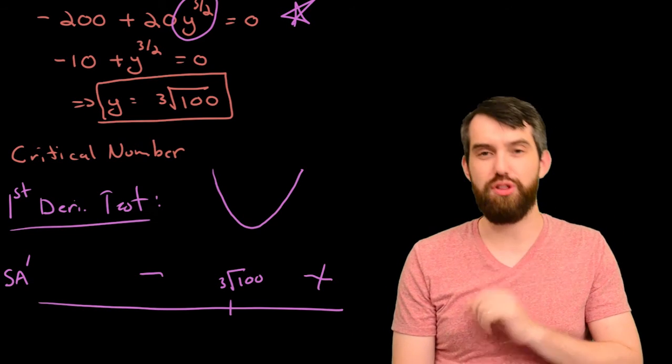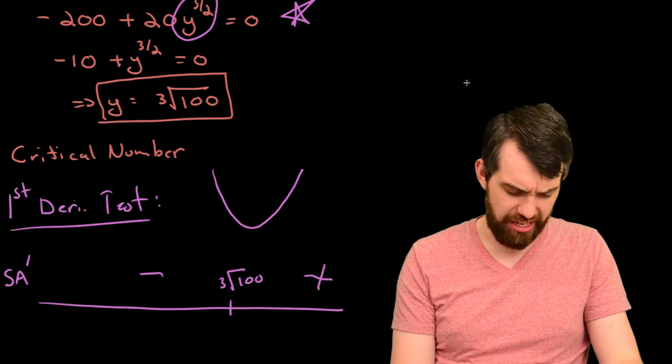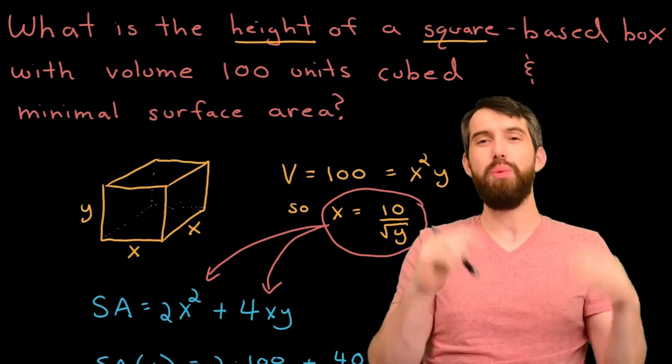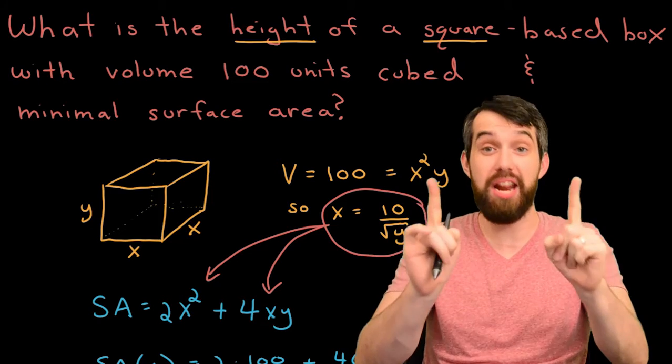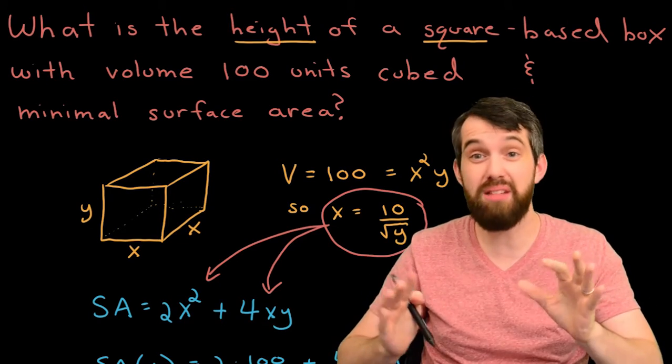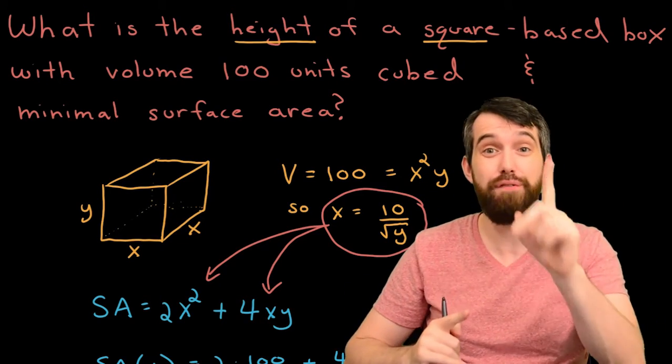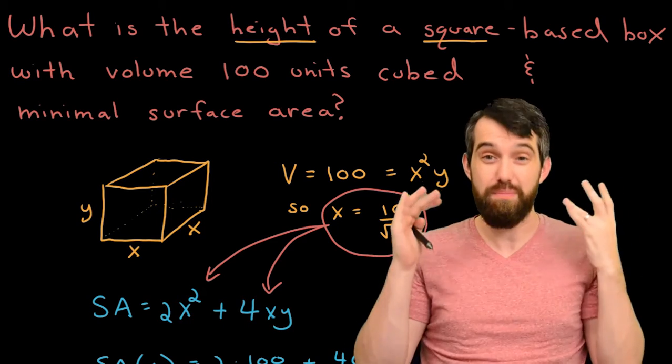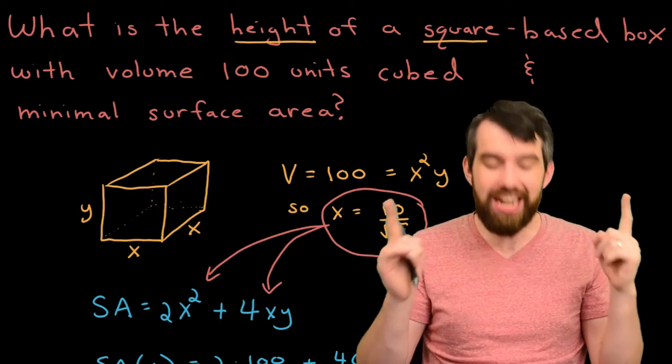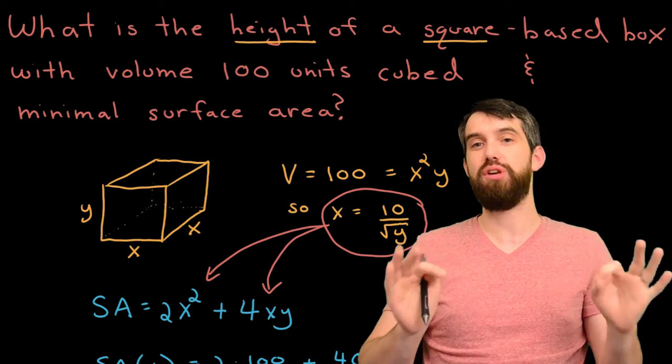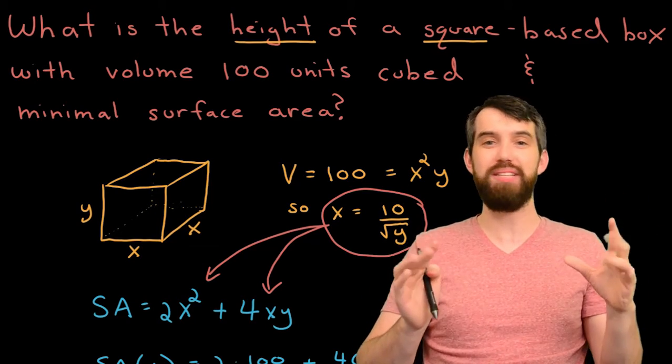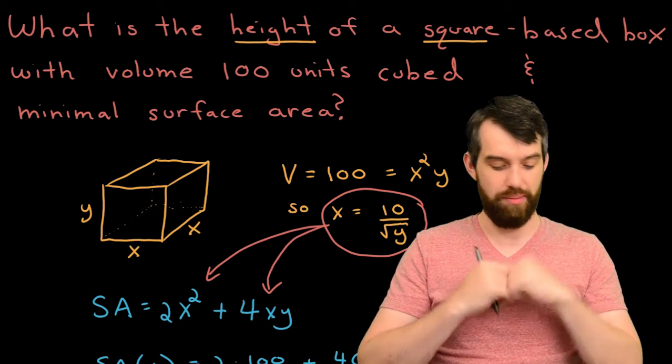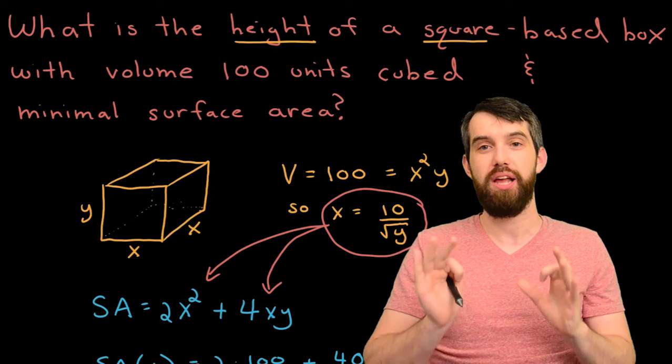Alright, now let's go all the way back up to the original problem and make sure that we've actually solved it. Okay, so what did the original problem tell us? It told us we wanted the height. Good. I was doing height. I was figuring out y. If I asked for something else, I would have had to do something else. I was asking for the height and that's what I did. What is the height of a square base box with volume 100? Well, I even put my constraint the volume equal to 100 and I was minimizing the surface area. And not only did I minimize it and get a critical number, but I verified that it was indeed a minimum. So I am content. I believe we have solved this problem.